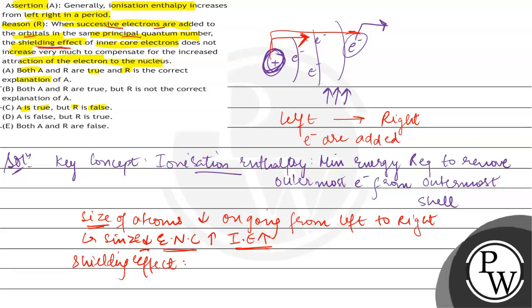Shielding effect basically means electrons are in between. So when there is an outermost electron, the inner electrons between the nucleus and the outermost electron keep a barrier, so that the attraction of the nucleus on the outermost electron will decrease.